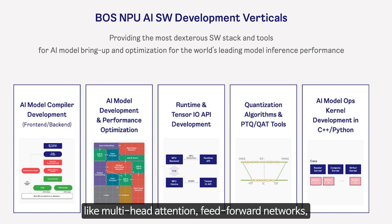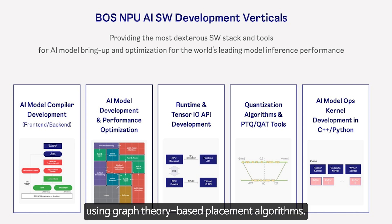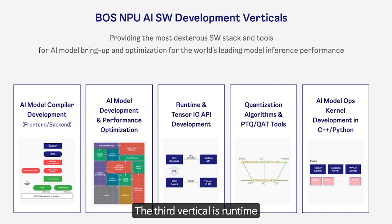We apply various techniques for the optimal placement of AI model operators, like multi-head attention, feed-forward networks, matrix multiplication, and convolution on a grid of computing cores using graph theory-based placement algorithms.